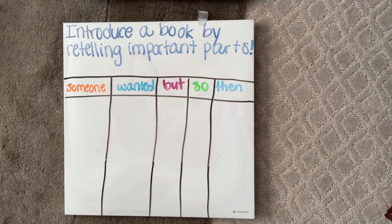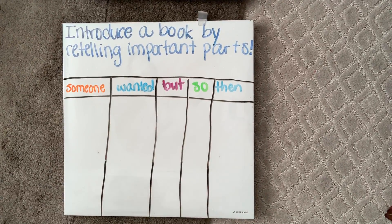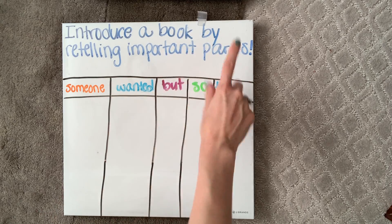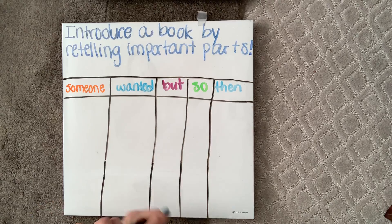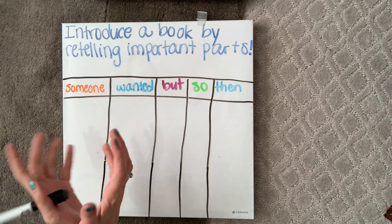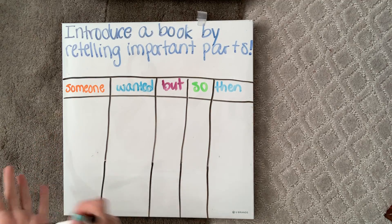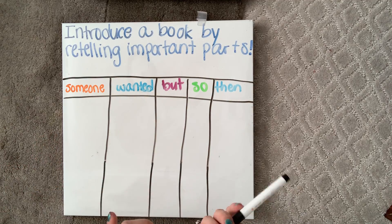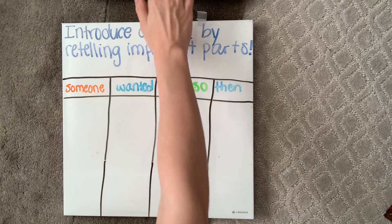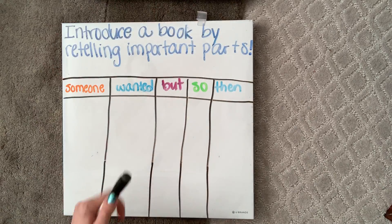Hey you guys! So today for our reading mini lesson, we are going to be learning how to introduce a book by retelling the important parts. For this mini lesson, we're going to be using the book Sebastian's Roller Skates. The read-aloud is linked in your lesson plan, or you can click on it in the description box below. Go ahead and read that book before we start our lesson, if you have not already.